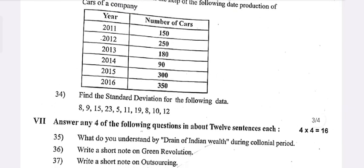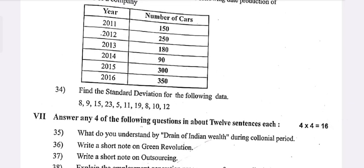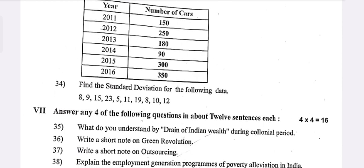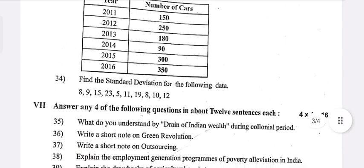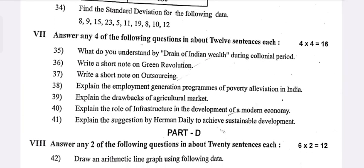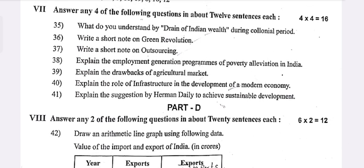Thirty-first: Briefly explain how statistics helps in the study of economics. Thirty-second: The lottery method — how does it give a random sample? Give an example. Differentiate between continuous and discrete variables. Draw a bar graph with the help of the following data: Production of cars by a company — years 2011 to 2015, with values 150, 250, 180, 90, 300, 350.